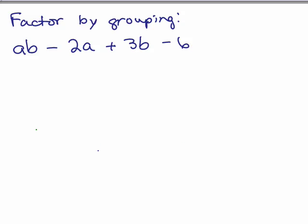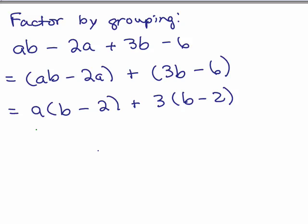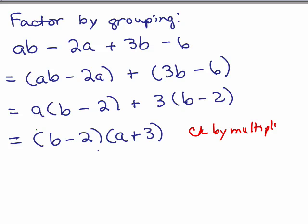Try factoring this polynomial using the grouping method — put it on pause and try it. Let's put the first two terms together: AB minus 2A, plus the second two terms together. Within the first parentheses, I could factor out an A and get (B - 2). In the second parentheses, I could factor out a 3. Now I have (B - 2) as a common factor in each of the two terms, so I pull that out to the front, giving (B - 2)(A + 3). Check by multiplying back out.